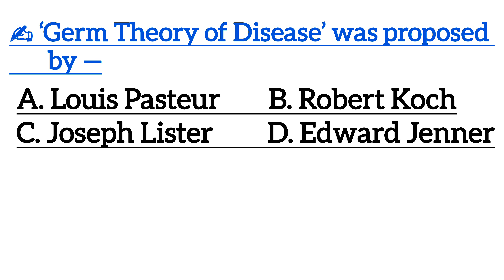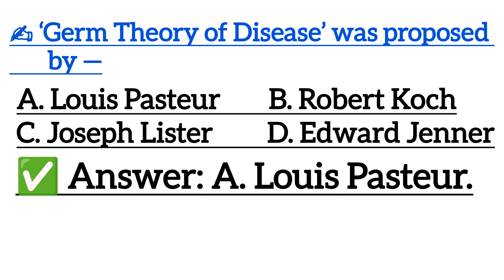Next one is: Germ Theory of Disease was proposed by — Option A: Louis Pasteur, Option B: Robert Koch, Option C: Joseph Lister, Option D: Edward Jenner. Correct answer is Option A: Louis Pasteur.